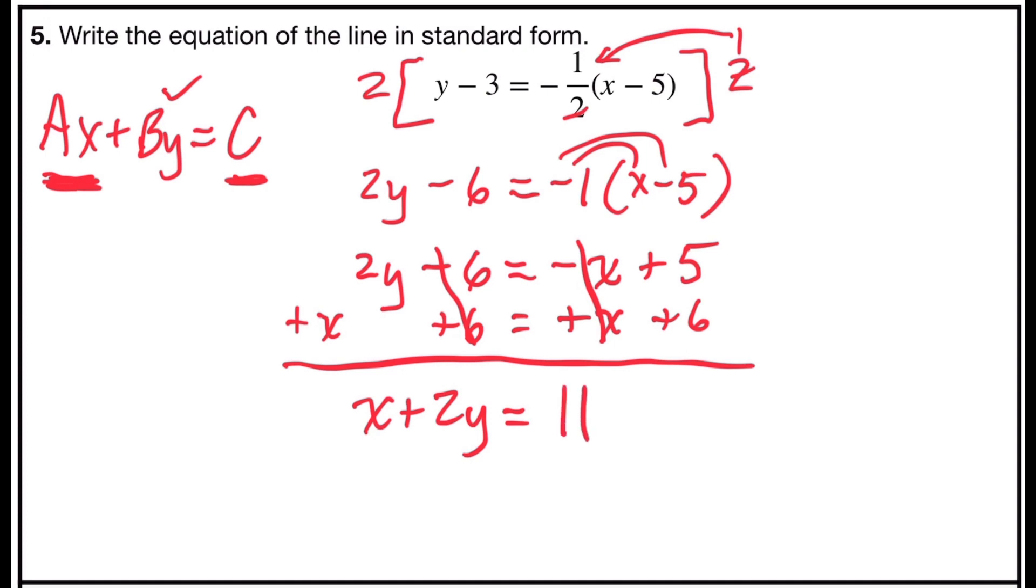So now I will check. I have a 1, a 2, and an 11, so all those are integer coefficients, and my leading a term is positive. So in standard form, my linear equation would be x plus 2y equals 11.